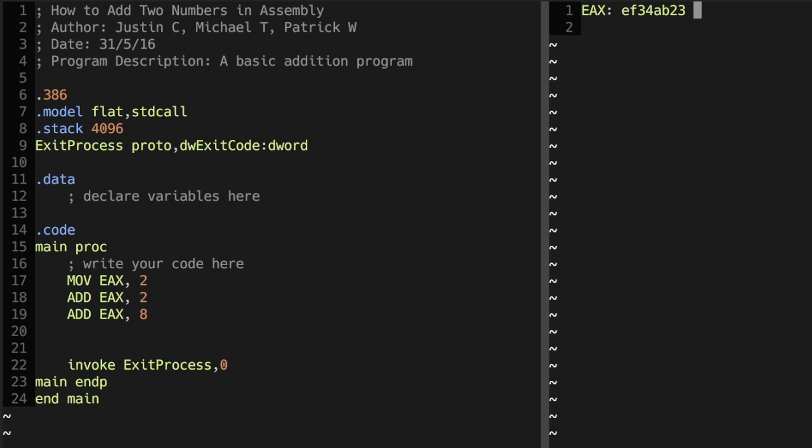Before we assign any value to our register EAX, it already has an auto-assigned random value by the computer. That's why we will first want to move a value into it before we do any addition on it. So once we do the instruction, move EAX, 2, we can see that the value of the register changes from that garbage value to the value 2.